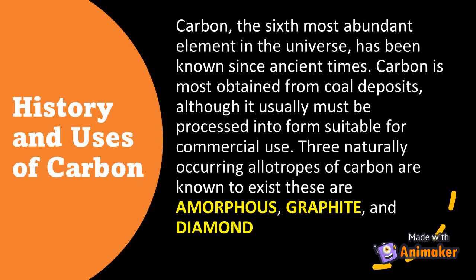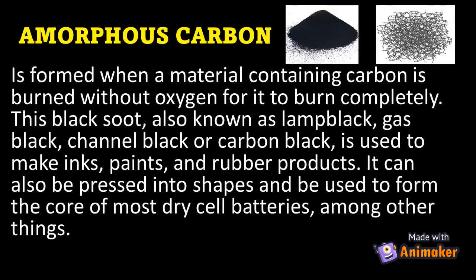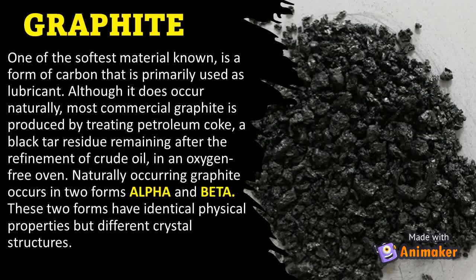Amorphous carbon is formed when a material containing carbon is burned without enough oxygen for it to burn completely. This black soot, also known as lamp black, gas black, channel black, or carbon black, is used to make inks, paints, and rubber products. It can also be pressed into shapes and used to form the core of most dry cell batteries, among other things.